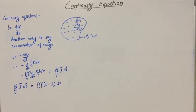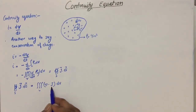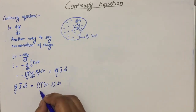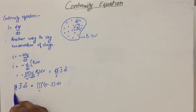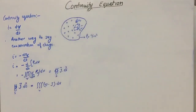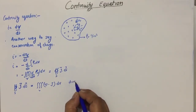Applying the divergence theorem, the surface integral of J·ds can be written as the volume integral of the divergence of the vector field J. The divergence theorem states that the volume integral of the divergence of a field over an entire volume equals the surface integral of the field over the closed surface surrounding that volume. We have studied this already.